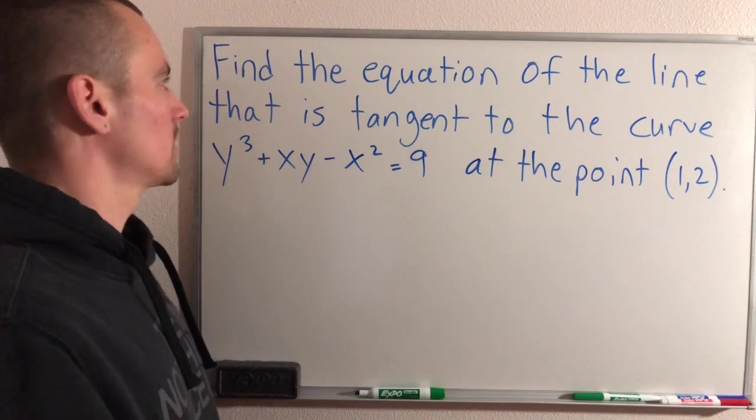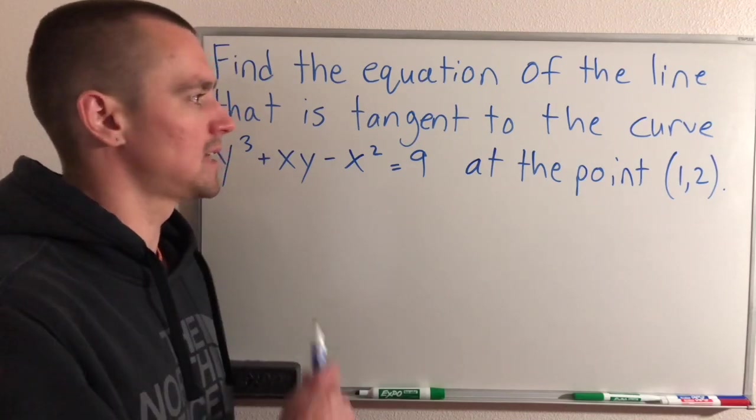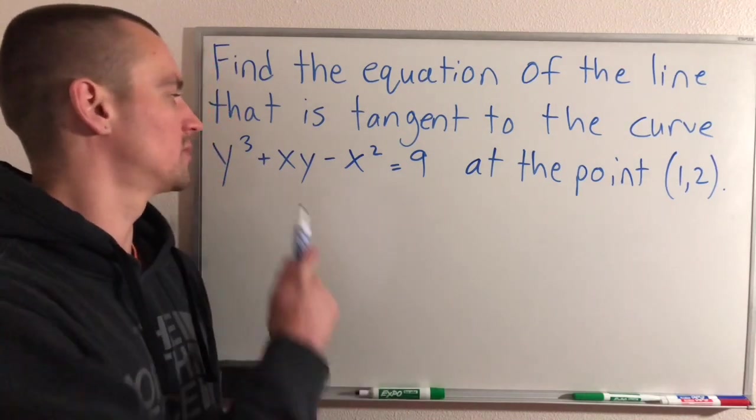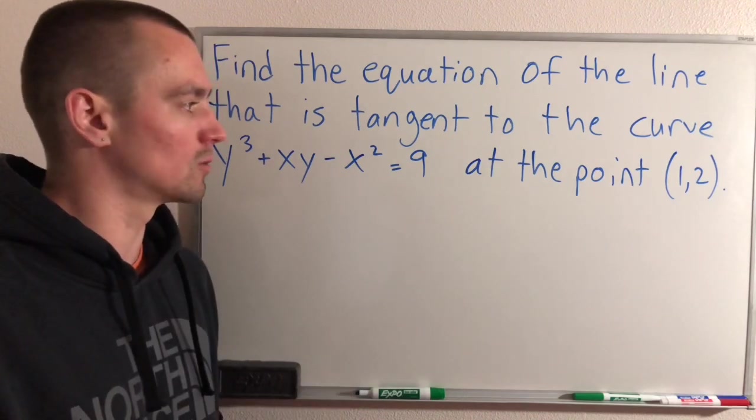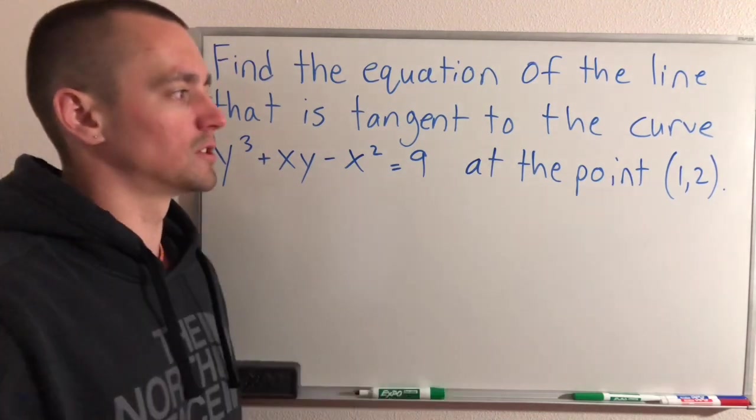So what we're going to be doing is finding the equation of the line that is tangent to this curve, y³ + xy - x² = 9 at the point (1,2).